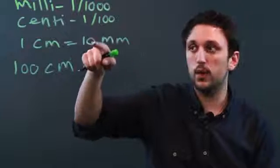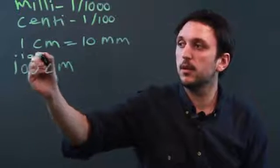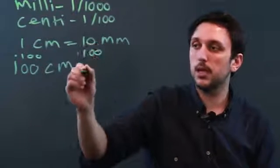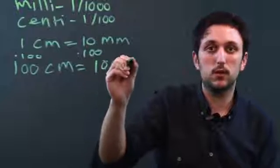So what do we have to do to this side? We also have to multiply by 100. So you can say times 100 times 100, and we get 100 centimeters equals 1,000 millimeters.